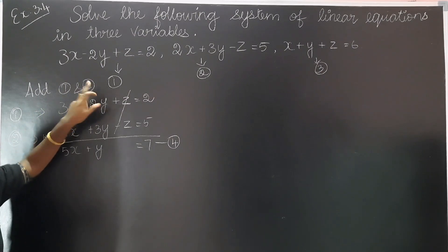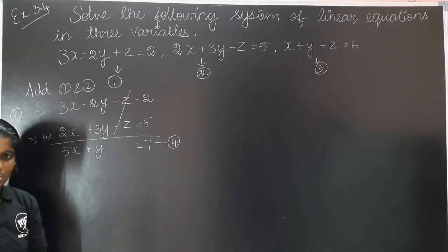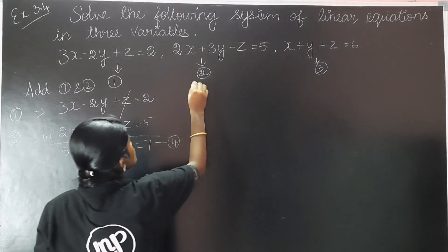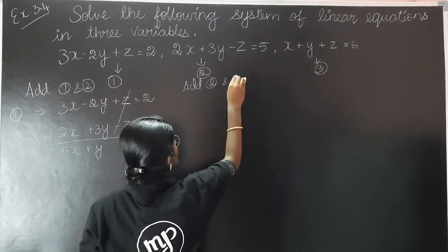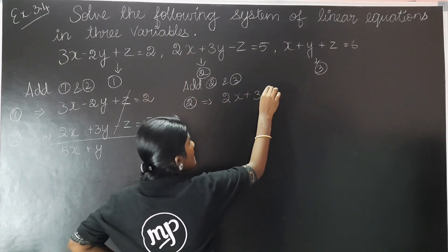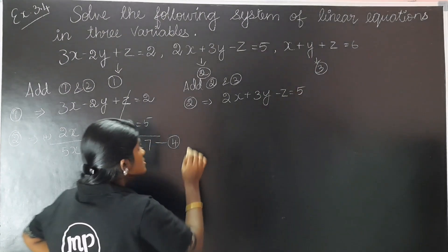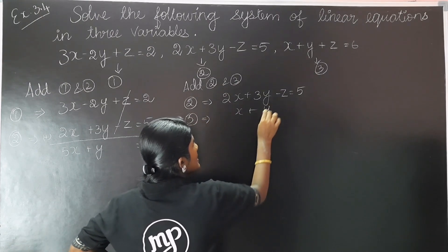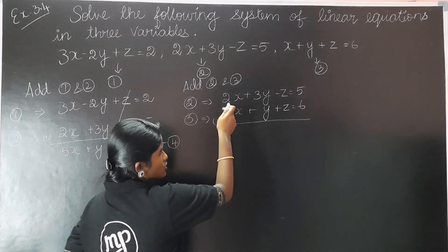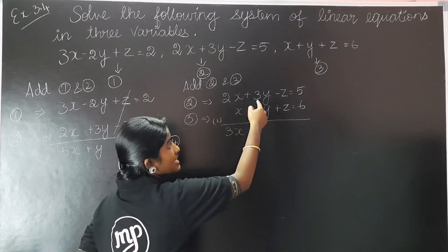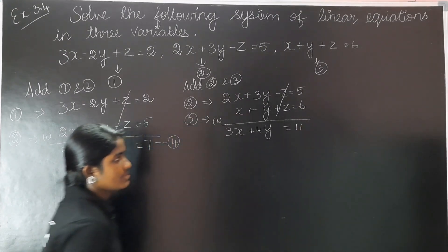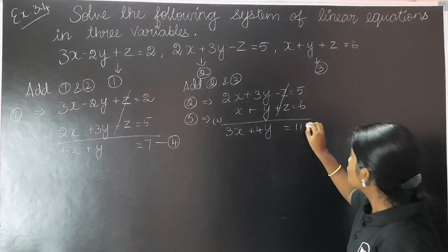Now I am going to add the second equation and the third equation. The second equation is 2x plus 3y minus z is equal to 5. The third equation is x plus y plus z is equal to 6. When you add them: 2x plus x becomes 3x, 3y plus y becomes 4y, and minus z plus z gets cancelled, and 5 plus 6 is 11. We assume this as the fifth equation: 3x plus 4y is equal to 11.